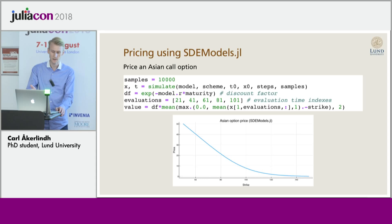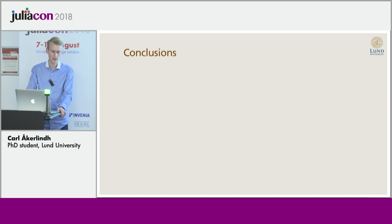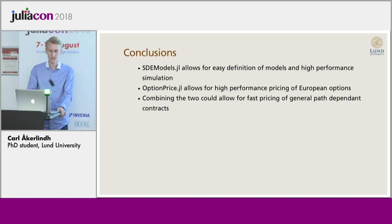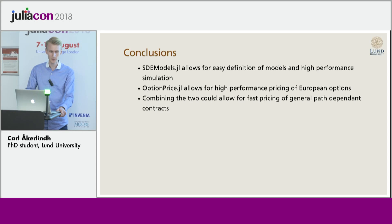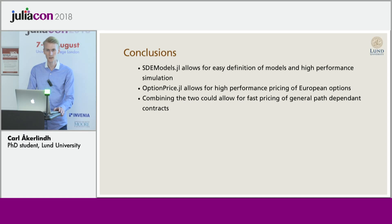Asian option pricing is not in optionprice.jl yet, but my conclusion is that with sdmodels.jl I can very easily define models and automatically get high performance. With optionprice.jl I can price European-type contracts — highly accurate and super fast. By combining these two packages I would like to have a function to price arbitrary path-dependent contracts using Monte Carlo methods.